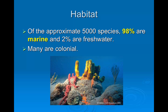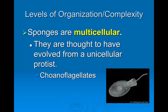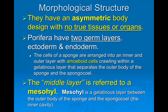Most sponges live in a marine environment; about two percent live in fresh water, and most live in colonies. There are about 5,000 species of sponges. They are multicellular, and we believe they evolved from a unicellular protist. If you look at the diagram of the choanoflagellate, you will see cells in sponges that look exactly like that — a vase shape with little flagella sticking out.